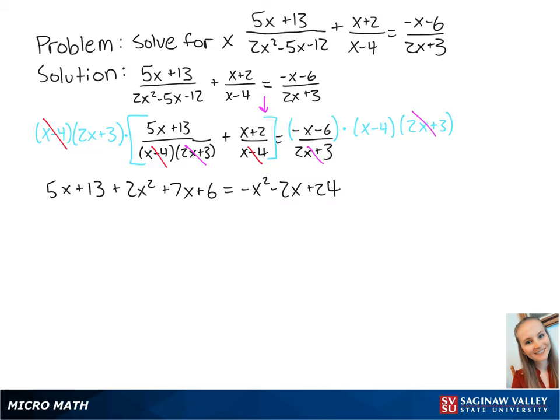If we add the like terms on the left side, we get 2x squared plus 12x plus 19 equals negative x squared minus 2x plus 24.